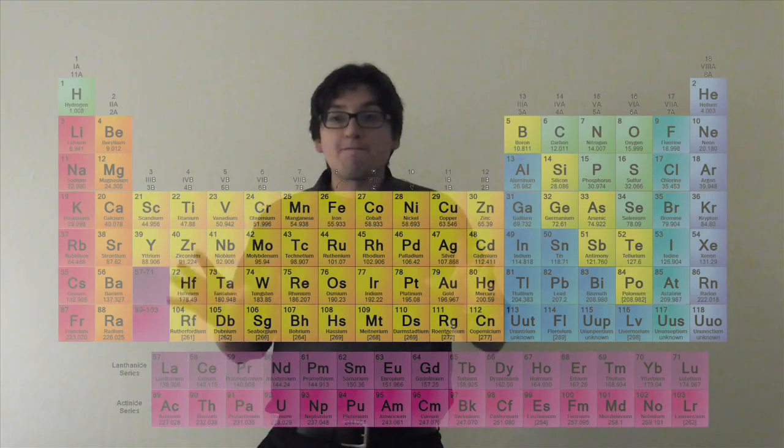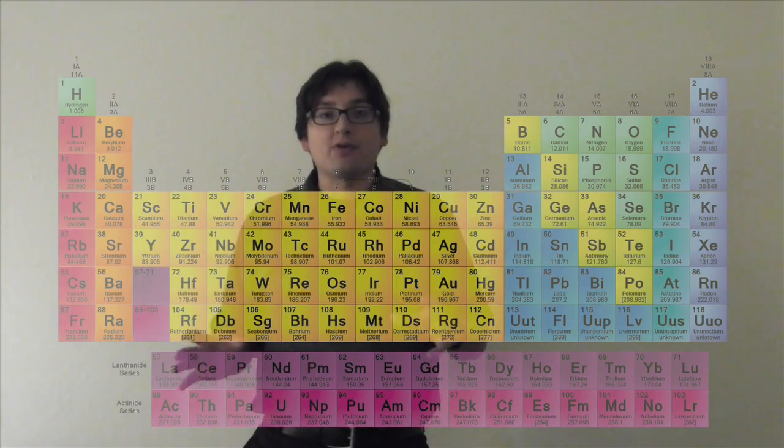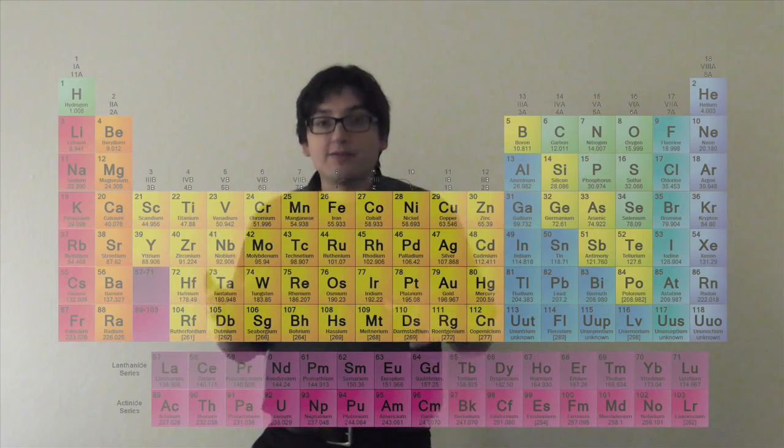So the periodic table tells you the electron configuration, and the electron configuration tells you the periodic table, the shape of the periodic table. They're deeply interconnected.